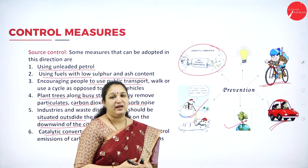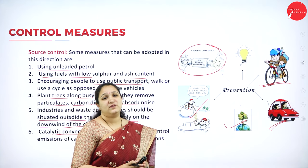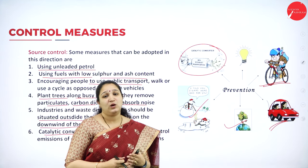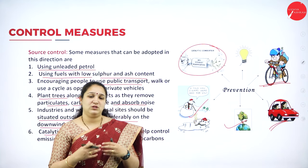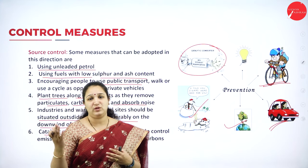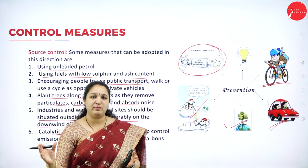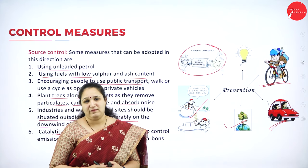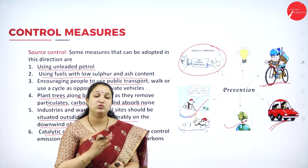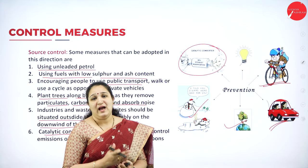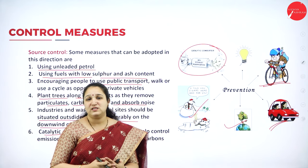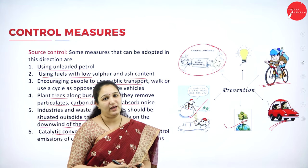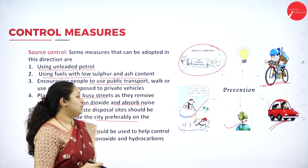There should be strict rules for all industries so that they use all required equipment before releasing exhaust gases into the air. The pollutants must pass through this equipment so that air pollutants can be neutralized before being released into the environment. Industries must be held accountable for controlling the amount of pollution they cause and ensuring they do not release harmful air pollutants into the environment.